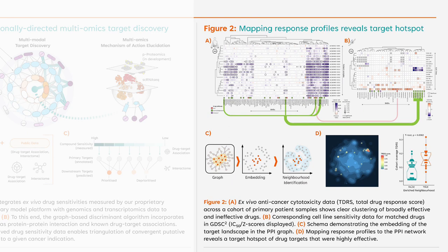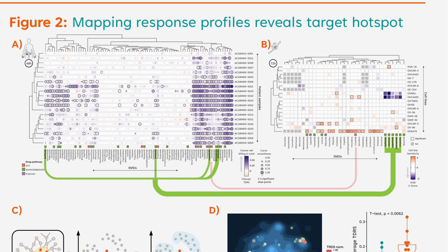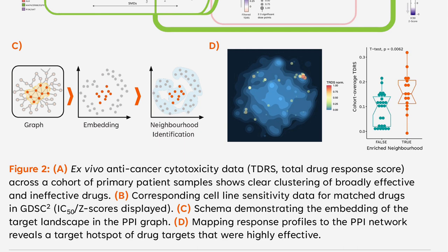Figure 2 shows how network mapping of response profiles from primary patient models can reveal overlooked target hotspots. Drug responses obtained from our primary sample phenotypic screen, Figure 2a, are compared to cell line sensitivity data, Figure 2b, and show that sensitive pathways found using our platform may have been missed by using cell line models. Our primary model system captured sensitivities to specific tyrosine kinase inhibitors not observed in cell lines or previously published data.